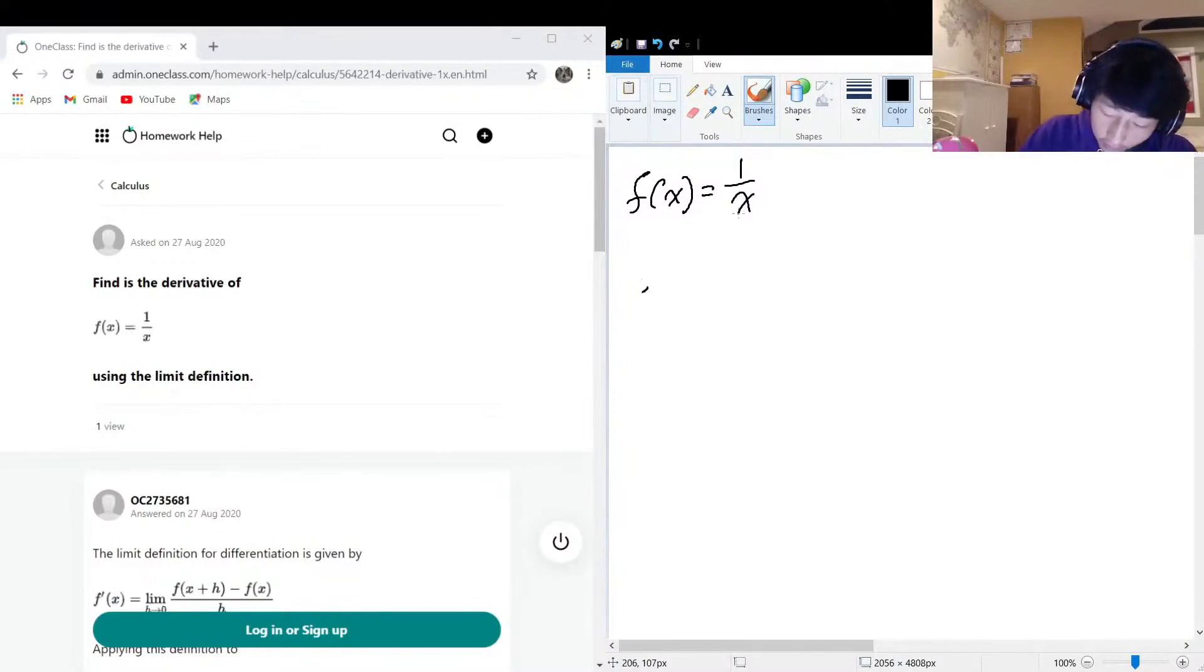So the limit definition is as follows. We have f prime of x, that just means the derivative of x, this is equal to the limit as h approaches zero of f(x + h)